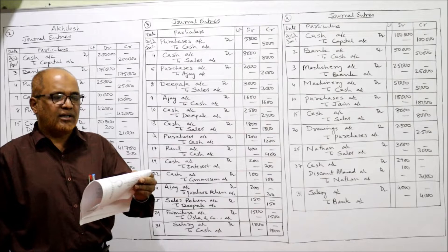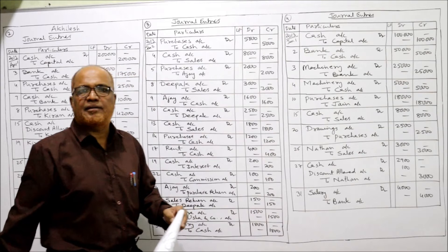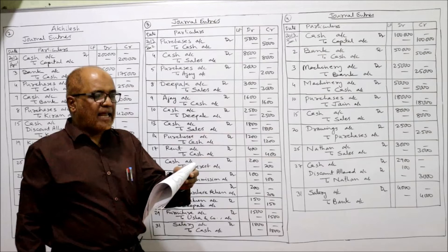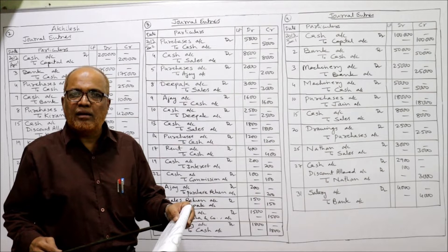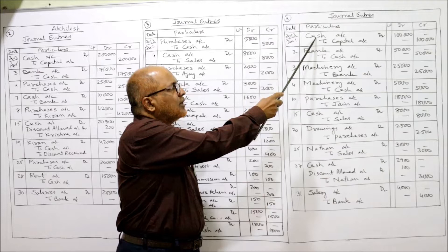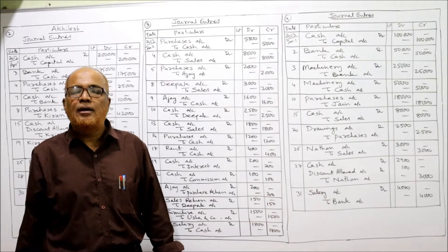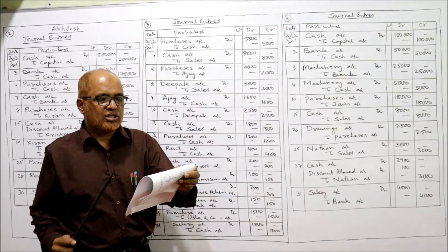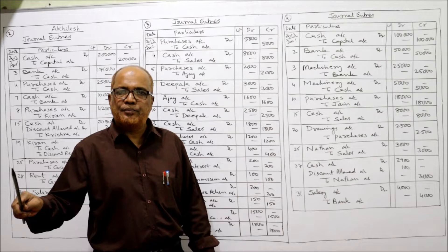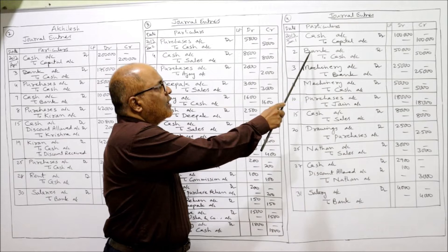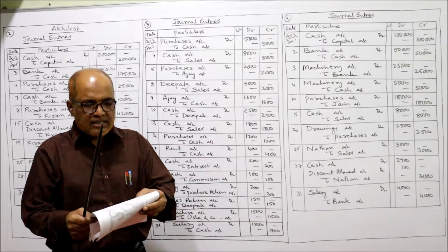Problem number four: pass the journal entries for 2013, January 1st. Mr. Narendar commenced business with cash rupees 1 lakh — cash is coming in, cash account debit to capital 1 lakh. When the owner invests money in the business it is called capital. Being the business started with cash. Second: opened bank account by depositing 50,000 — cash is going out, cash account is credited. Bank is the receiver, so bank account debit to cash. Being the cash deposited in bank.